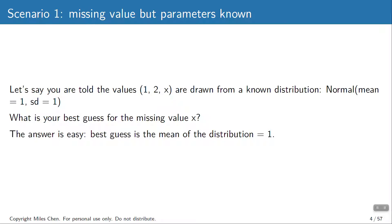Let's say you have the values 1, 2, and a missing value x, and you know they come from a normal distribution with mean 1 and standard deviation 1. What's your highest probability guess for x? You'd say, if the distribution is normal with mean 1, the maximum likelihood guess would just be 1 — the value right at the mean. It could be higher or lower due to randomness, but to maximize the probability of the guess, you'd guess 1.